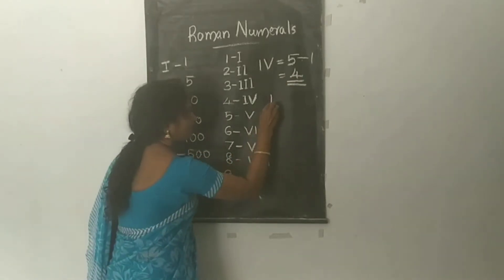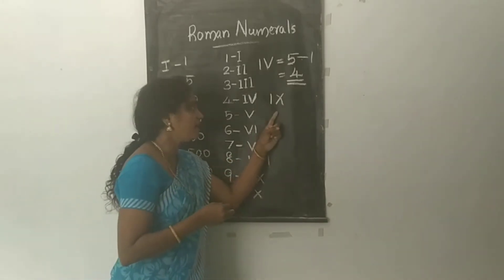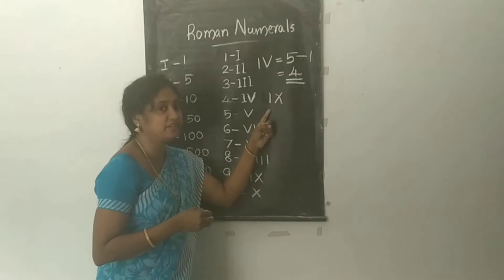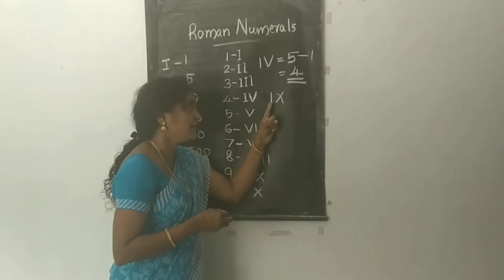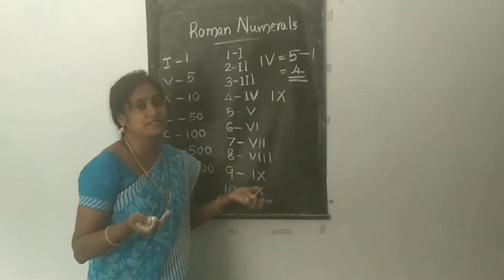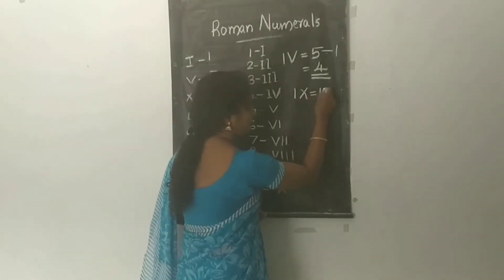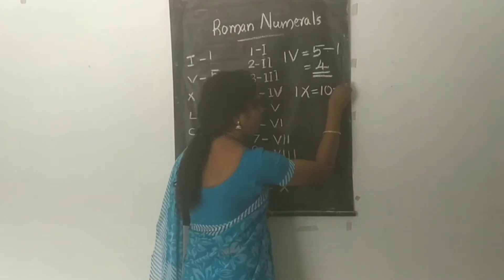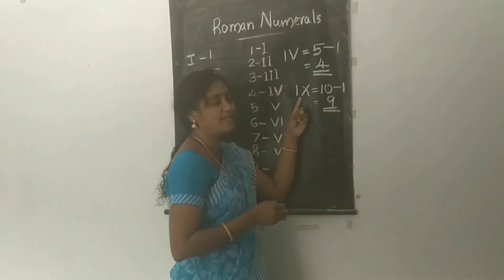Similarly, IX — X stands for 10 and I is on the left-hand side, so we subtract 1. Therefore 10 minus 1 equals 9, and 9 is written as IX.